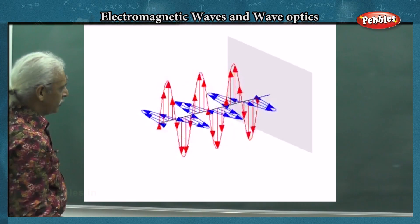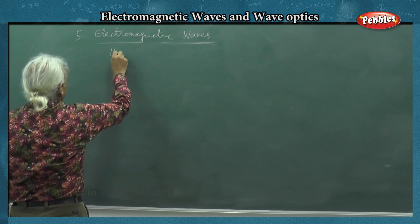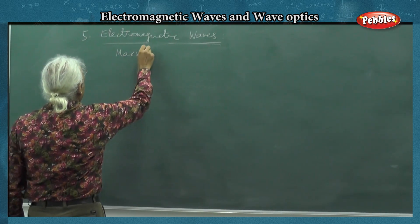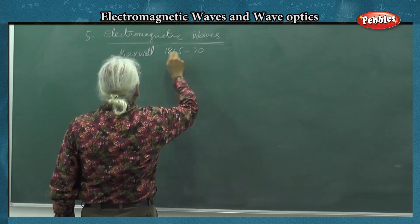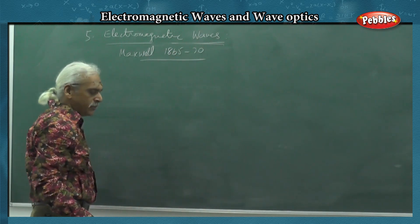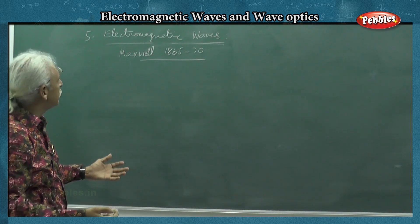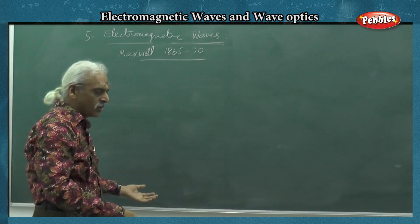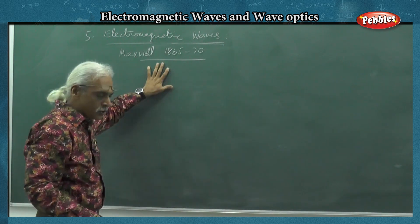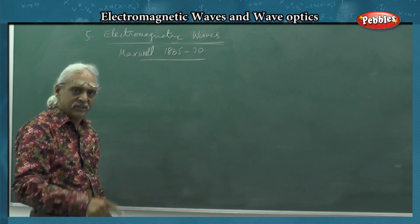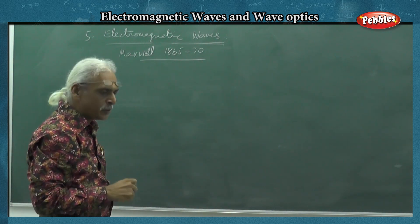Electromagnetic waves - the idea of Maxwell. In the time period of 1865 to 1870, Maxwell was able to combine electric and magnetic laws into a single equation called the wave equation. From that, he predicted that electromagnetic waves exist and that light is an electromagnetic wave.